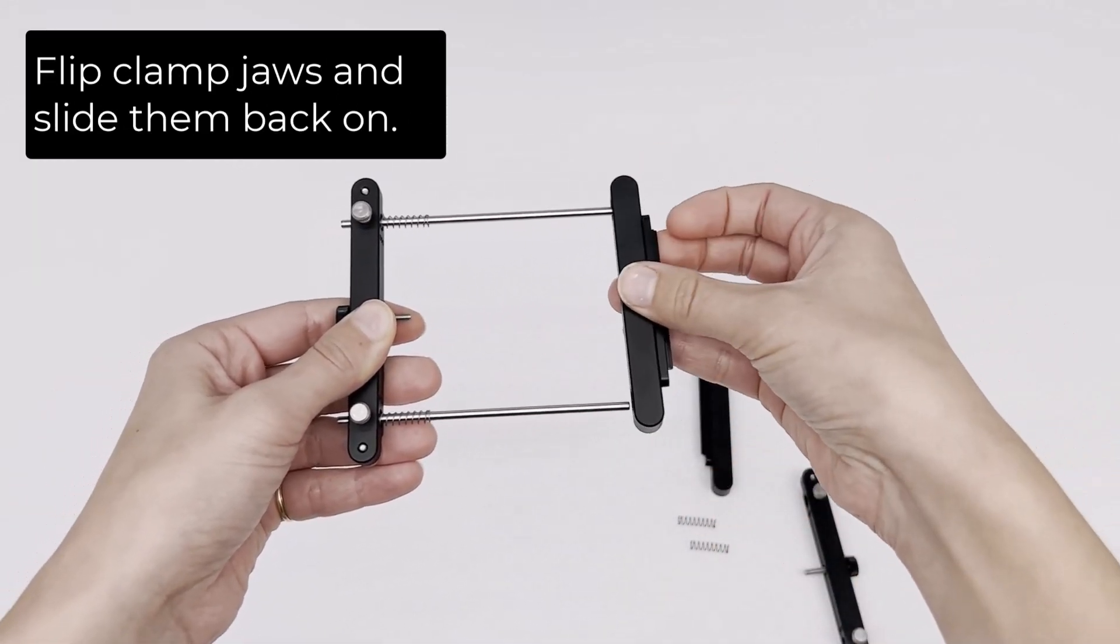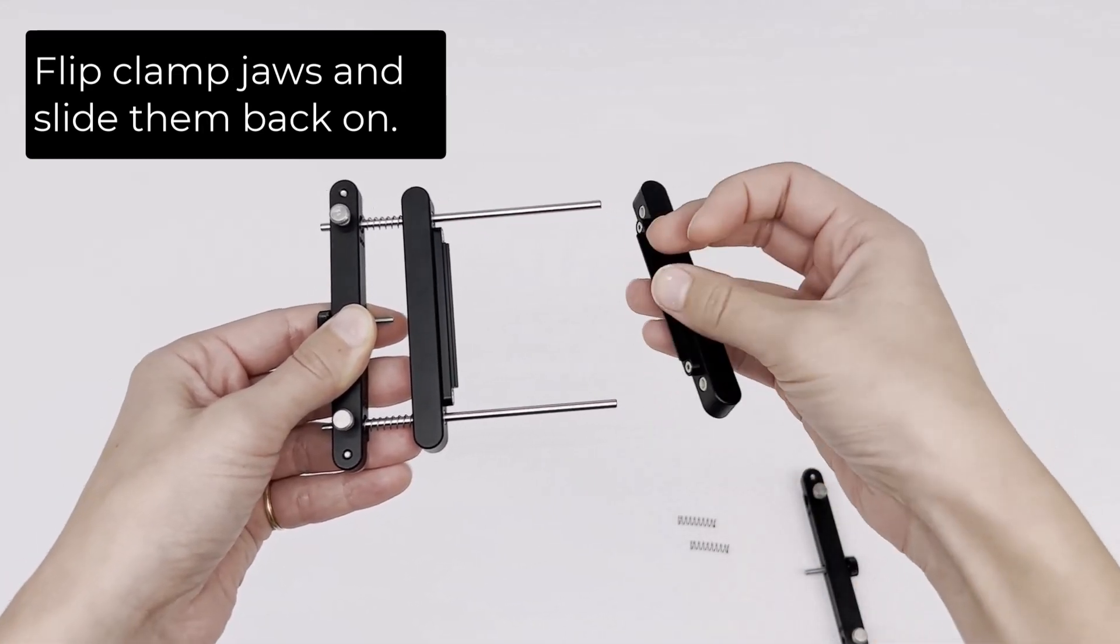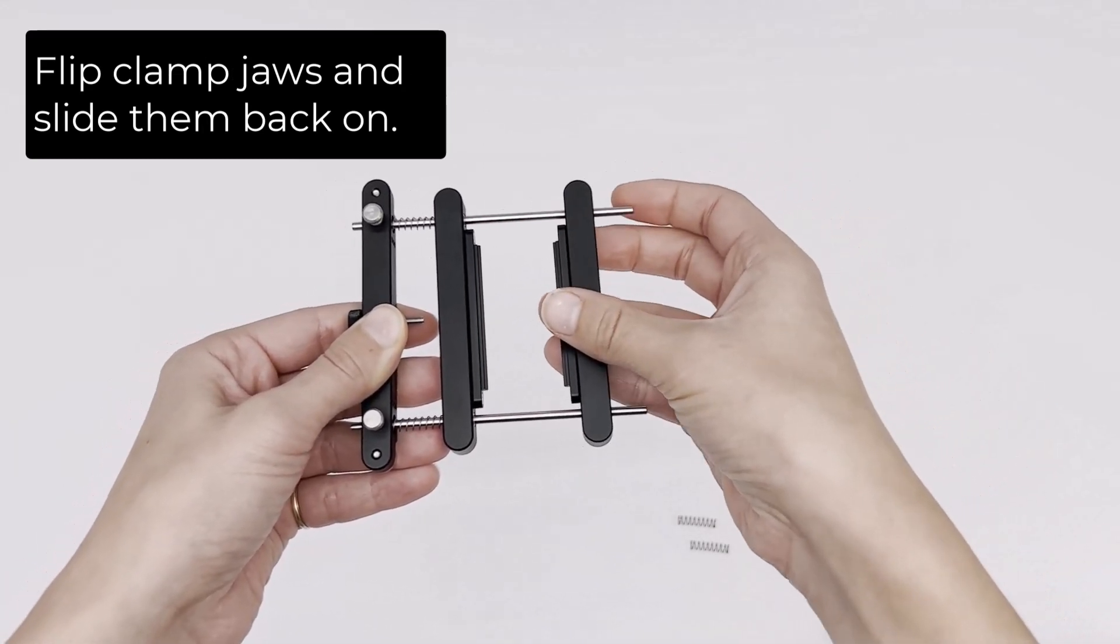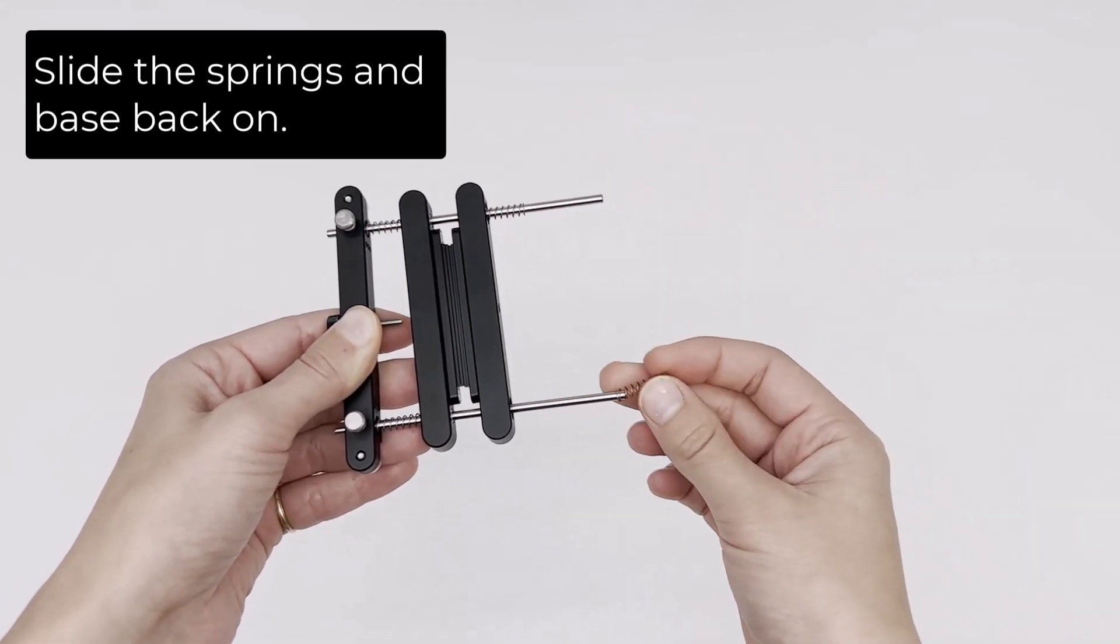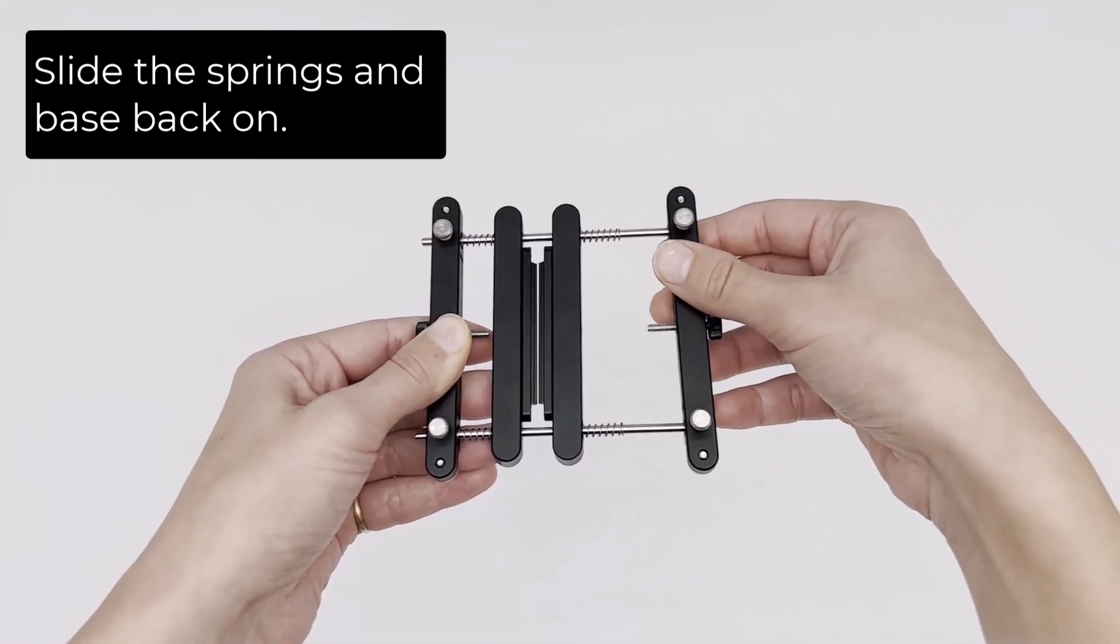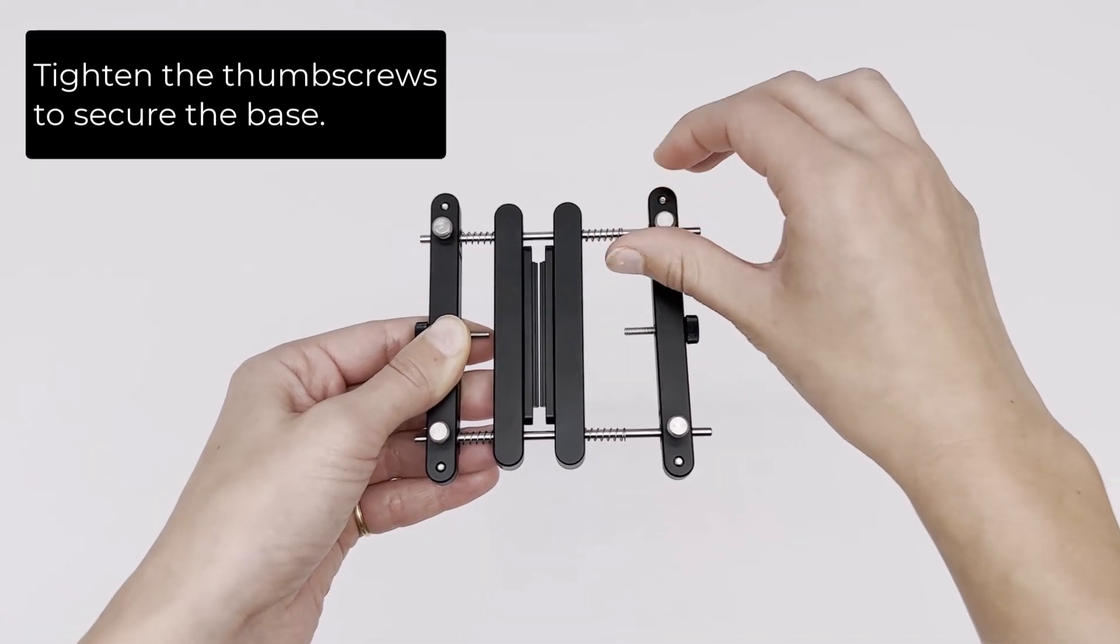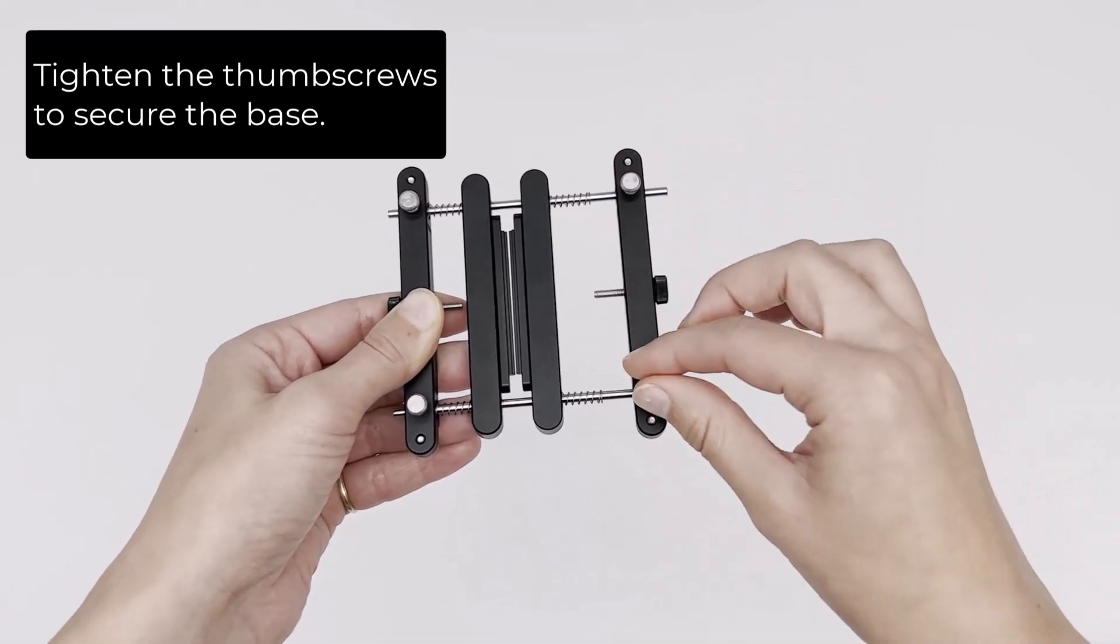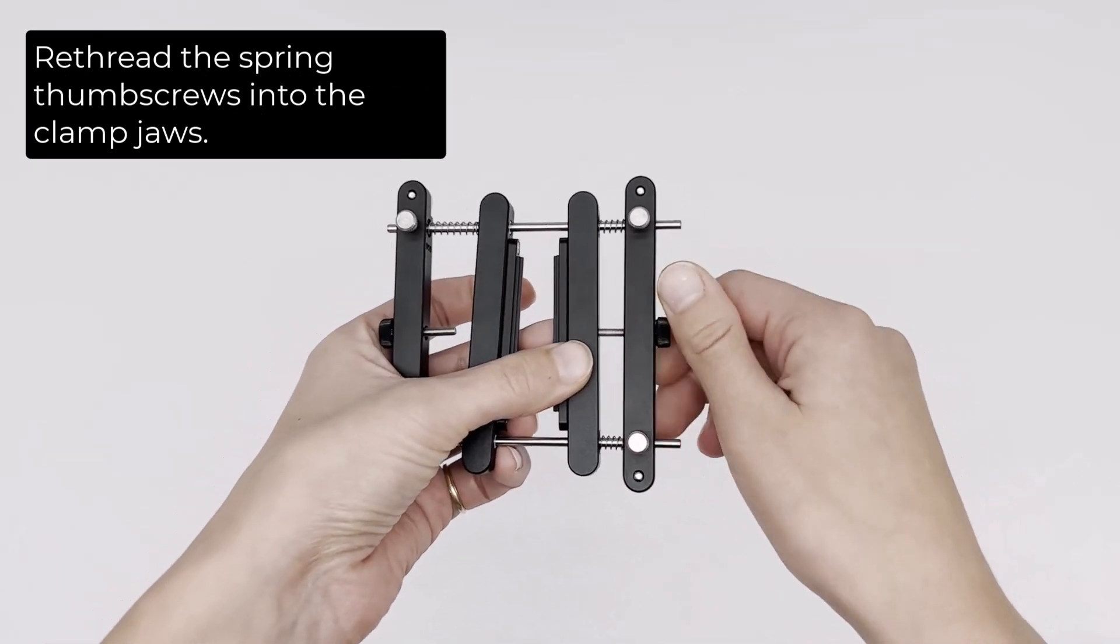Flip clamp jaws and slide them back on. Slide the springs and base back on. Tighten the thumb screws to secure the base. Re-thread the spring thumb screws into the clamp jaws.